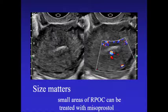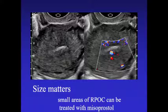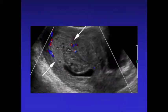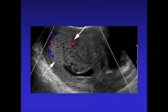Small areas of retained products can be treated with medications — usually at my institution they use misoprostol. Larger areas we measure in three dimensions, and that measurement helps them decide how to go after the material.